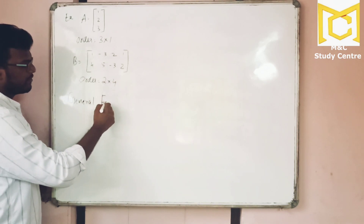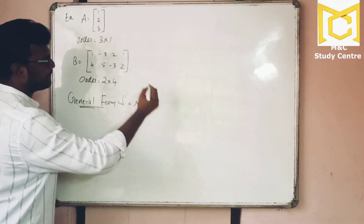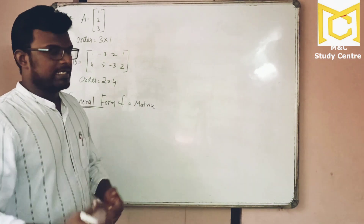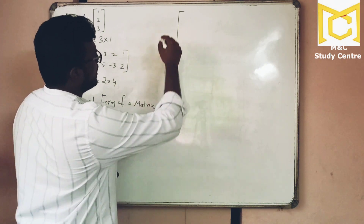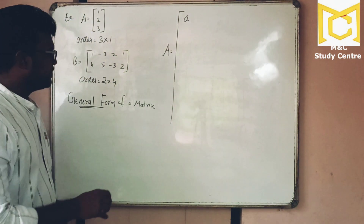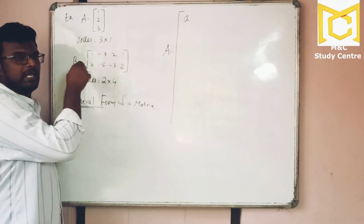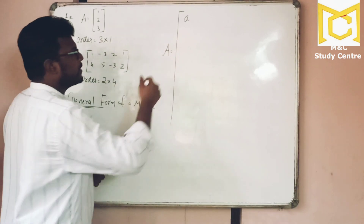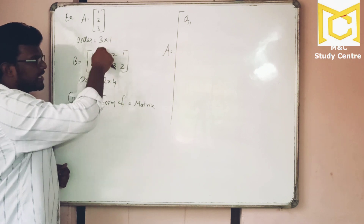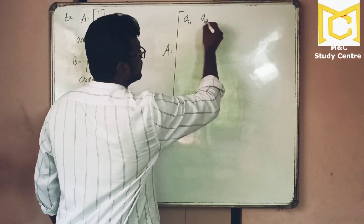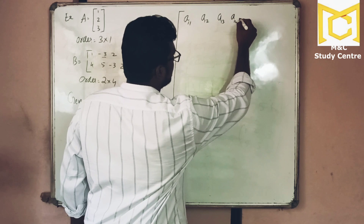Next concept: the general form of a matrix. Each element in a matrix has a position. For the element in the first row, first column, you write it as A₁₁. The element in first row, second column is A₁₂. Then A₁₃, A₁₄, and it goes on up to A₁ₙ for the nth column.